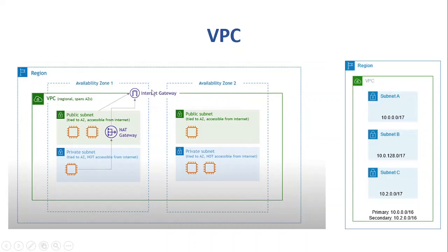There is one more concept we need to be aware of: route tables. Route tables are basically tables that define how traffic is routed within the VPC. By default, when we create a VPC, a main route table is created, but we can create additional route tables to control traffic. It basically contains just two columns: target and destination.